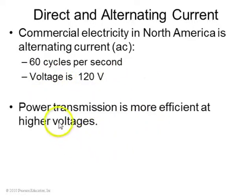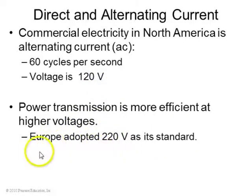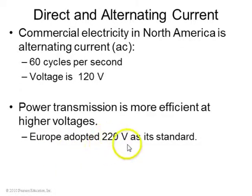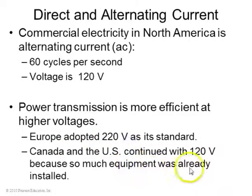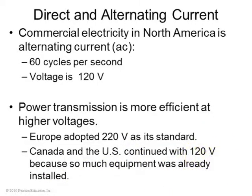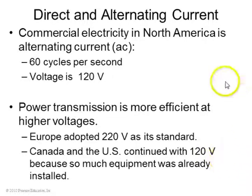Power transmission is more efficient at higher voltage. Across the Atlantic, Europe tends to use 220 volts as the standard — a little more efficient than Canada and the US, which continues to use 120 volts just because so much equipment is already installed using 120 volts. It's historical.